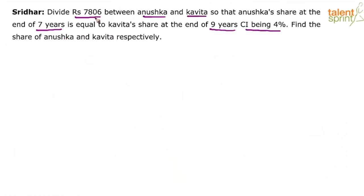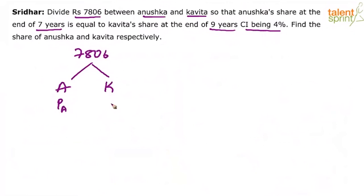So basically there is a sum of rupees 7806 that has been divided between Anushka and Kavita. Let's say the principal of Anushka is PA and the principal of Kavita is PK. The rate of interest is 4% for both, the time period for Anushka is 7 years and for Kavita is 9 years.